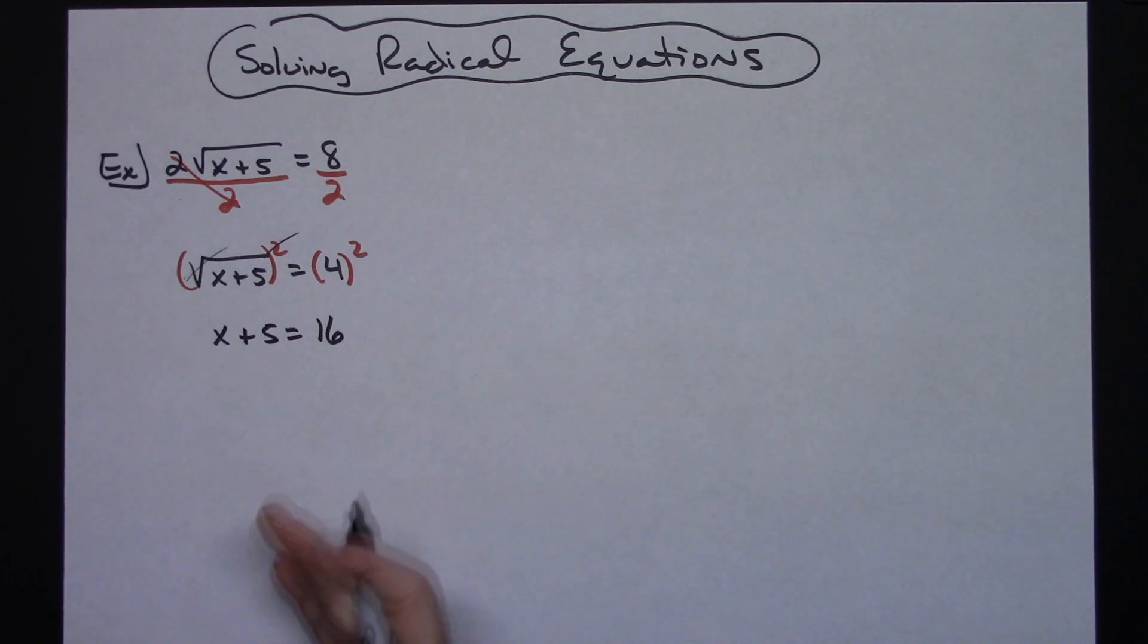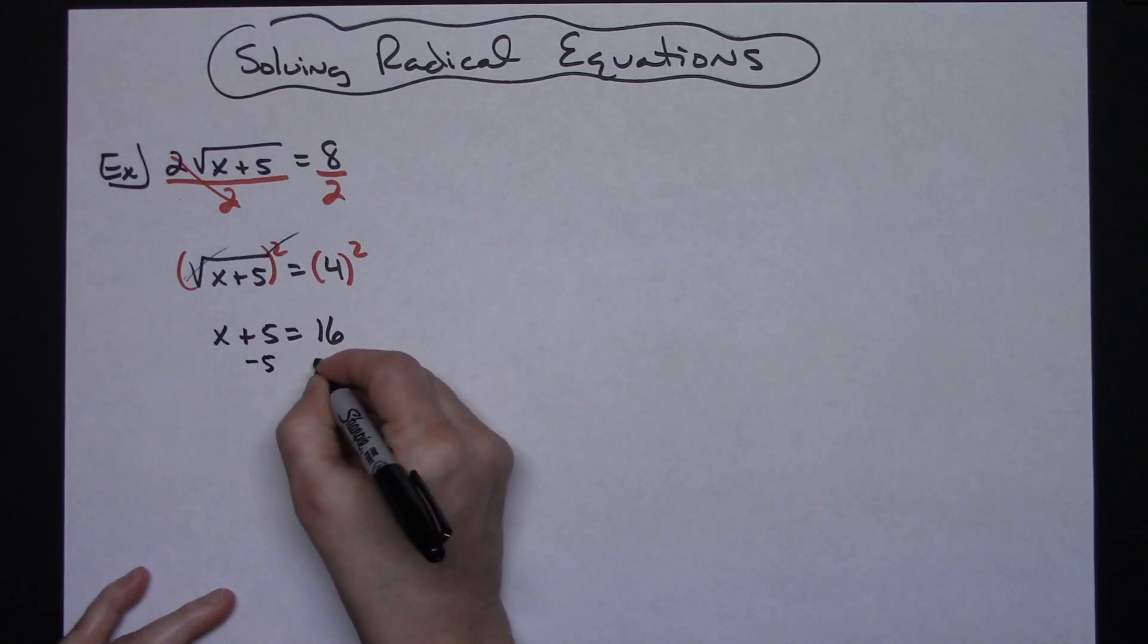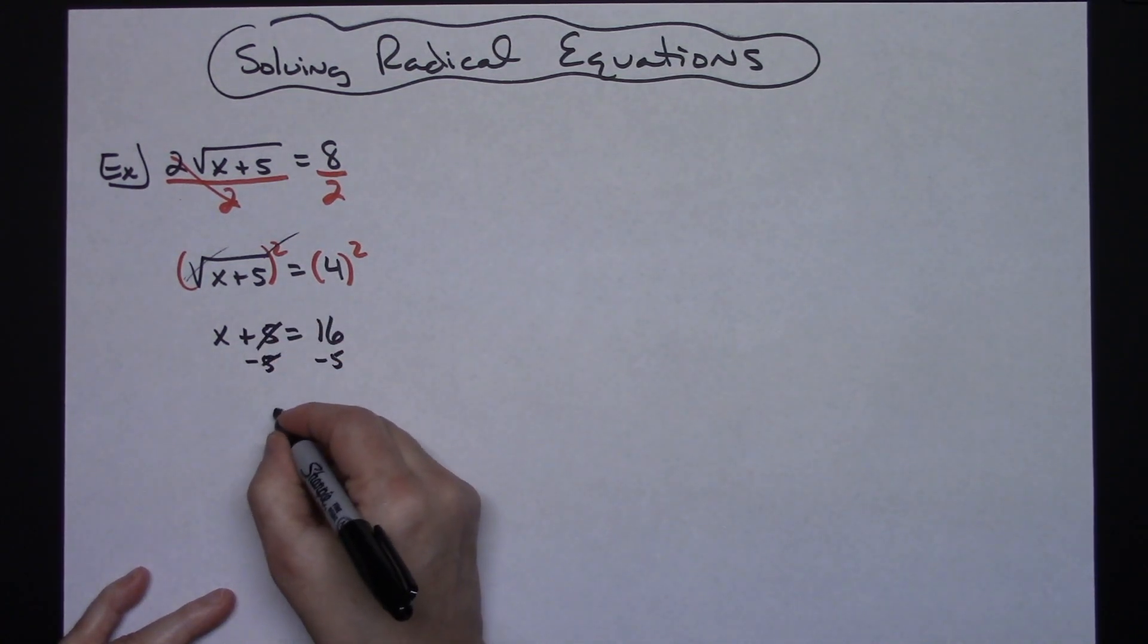Once that square root is gone, it becomes a relatively simple equation to solve. I can just subtract 5 from both sides—minus 5, minus 5—and that's going to give me x equals 11.